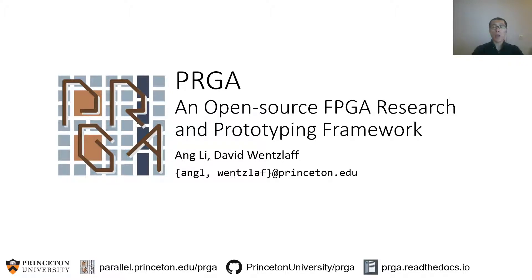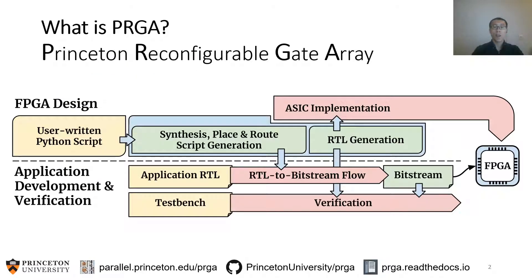You can access PRGA with any of the links at the bottom of the slides. PRGA is short for Princeton Reconfigurable Gate Array. With PRGA, you can write a simple Python script to create and customize your own FPGA. To clarify, PRGA is not for creating designs that you run on pre-existing FPGAs. Instead, it is for designing the FPGAs themselves. As shown in the simplified workflow, PRGA will generate the RTL that can be simulated, synthesized, and possibly manufactured with commercial EDA tools.